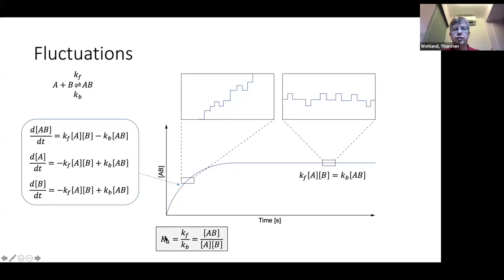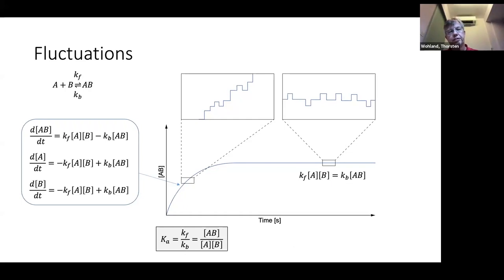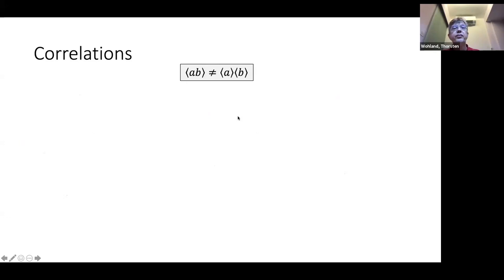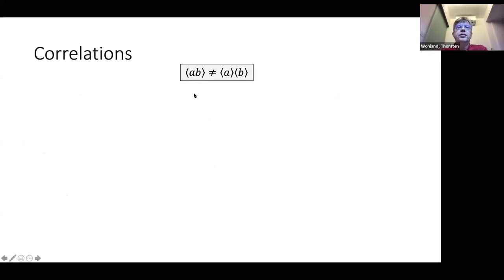From the equilibrium equation we can determine the association constant. That's why fluctuations are important — all we need is to measure fluctuations. That brings us to the second concept: correlations.